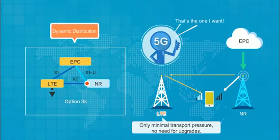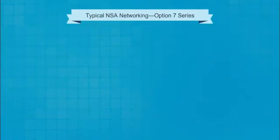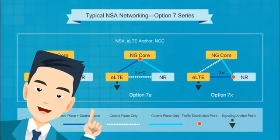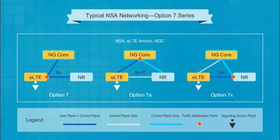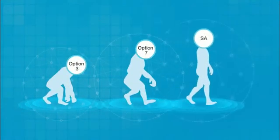Now let's look at the Option 7 series. The difference from Option 3 is the core network — it has been replaced by an NGC. Otherwise, the Option 7 series is the same as the Option 3 series. As the control plane signalling is anchored on the LTE side, the Option 7 series options are all types of NSA networking. We can think of the Option 7 series as transitional schemes for evolution from Option 3 to SA networking.